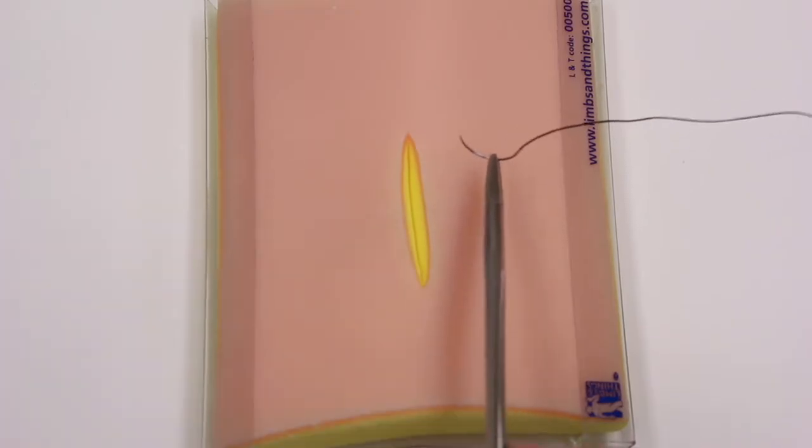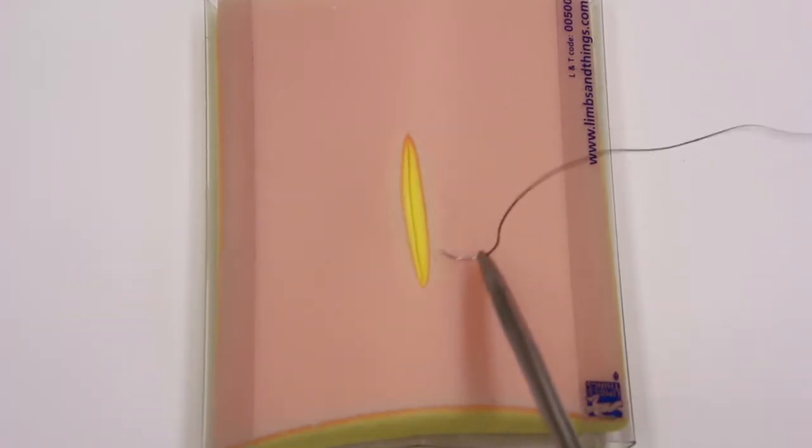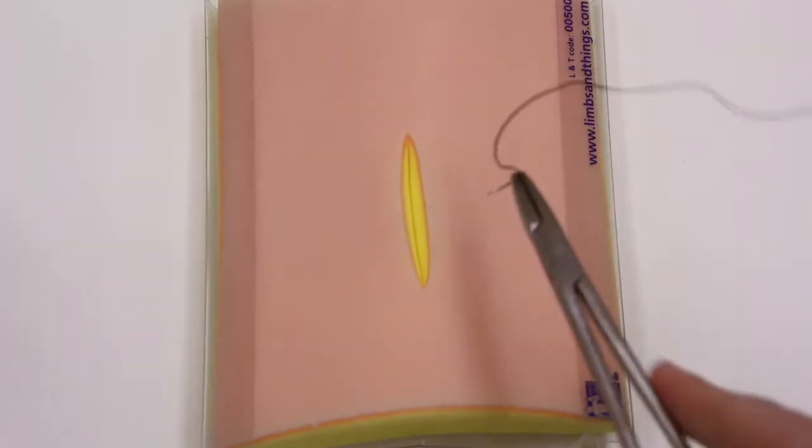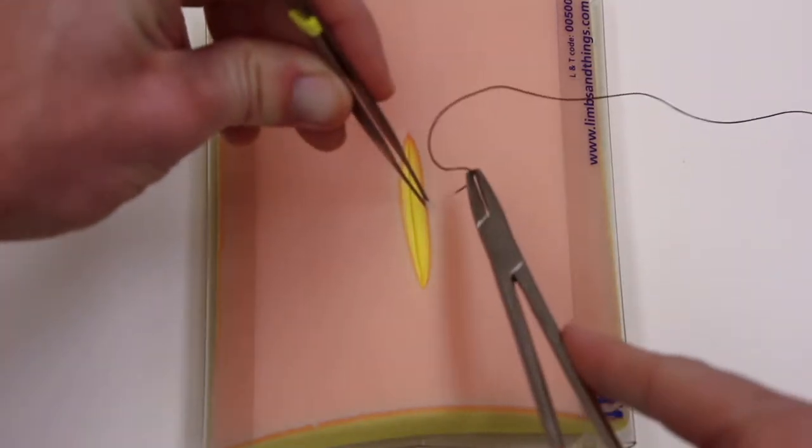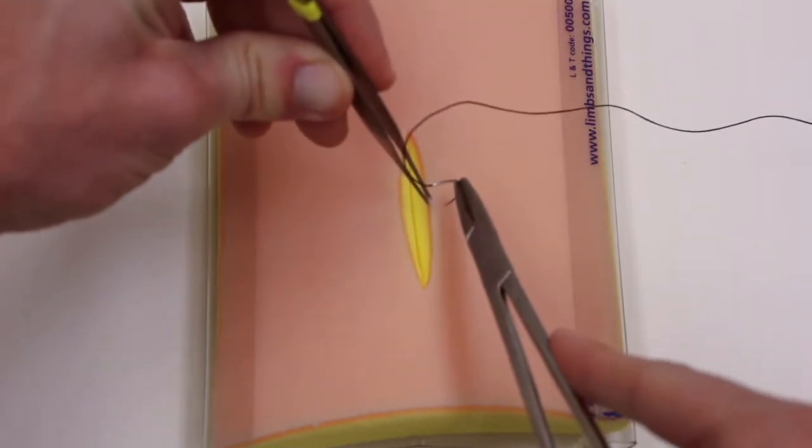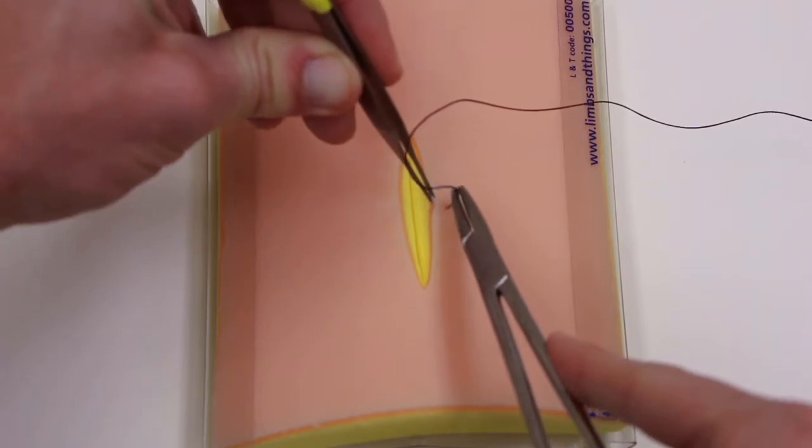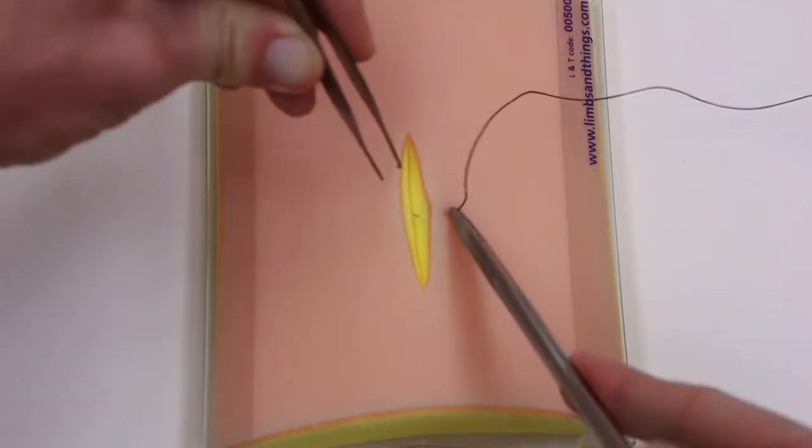So in looking at the incision itself, your first should be about halfway between. Now grabbing the skin edge, needle entering orthogonal to the skin, perpendicular to the skin. Your first one is often easier to take in two bites.